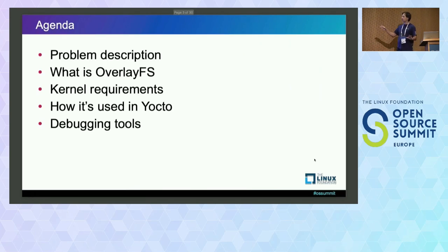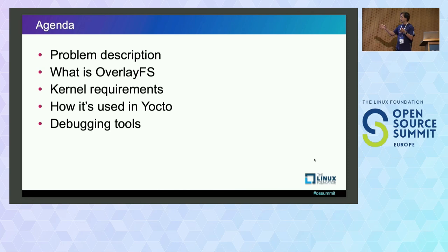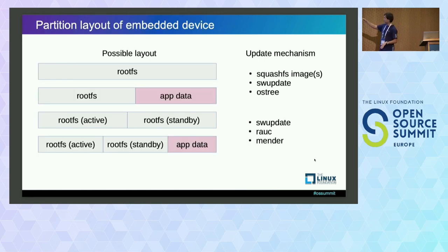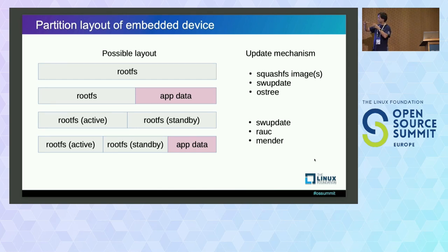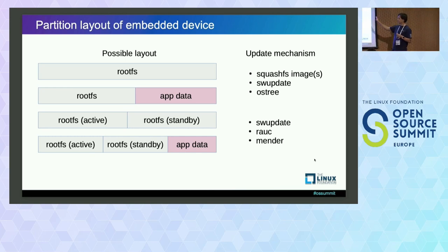So before we start — what overlayFS is and what it helps us to do — we better understand the problem we are trying to fix here. And then we go into details of how overlayFS works and how we can use it in Yocto. So imagine your embedded device. When you design it, you usually have some partition layout. It can be just the whole partition where the whole rootFS takes up the whole space, or you can have a rootFS partition and then some application data partition.